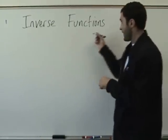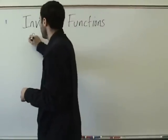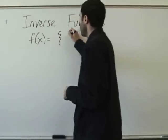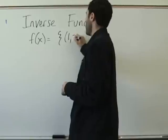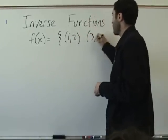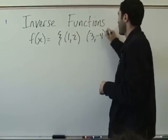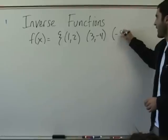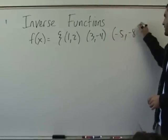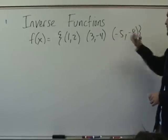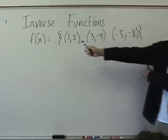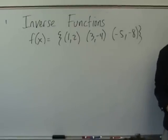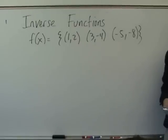So let's think about it. If you had a function with these points: (1, 2), (3, -4), (-5, -8). What are the squigglies? These imply it's a set of three points. We call them braces. Many of you are wearing them now.